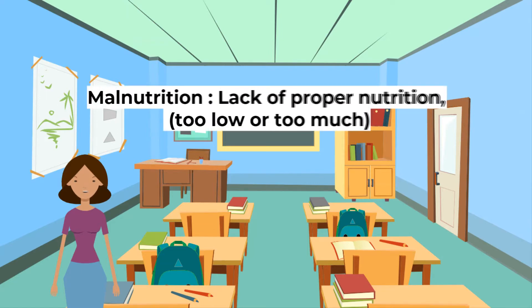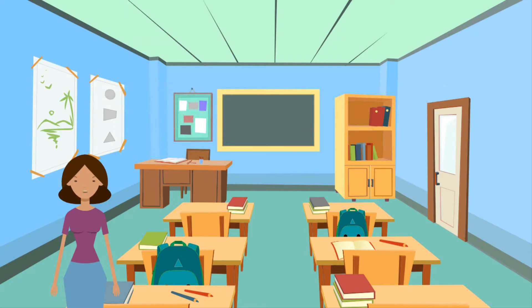Next, malnutrition — a lack of proper nutrition. This can be too low or too much, caused by not having enough to eat, not eating enough of the right things, or being unable to use the food that one does eat.